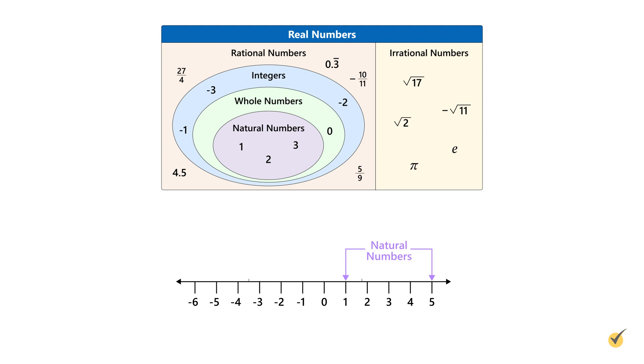These are all positive non-decimal values starting at one. Whole numbers encompass all natural numbers with the addition of zero. Integers are whole numbers and their additive inverses, or negatives.